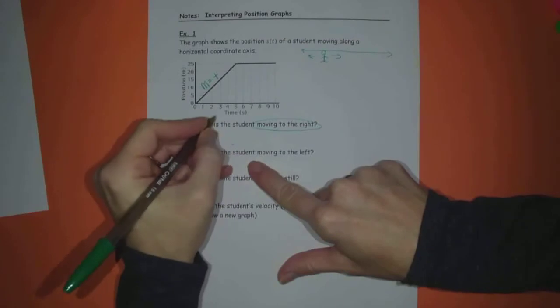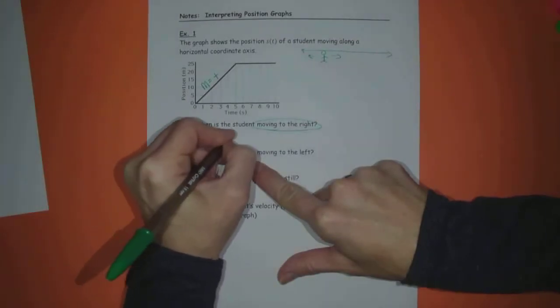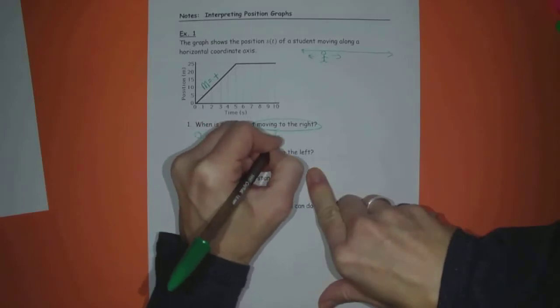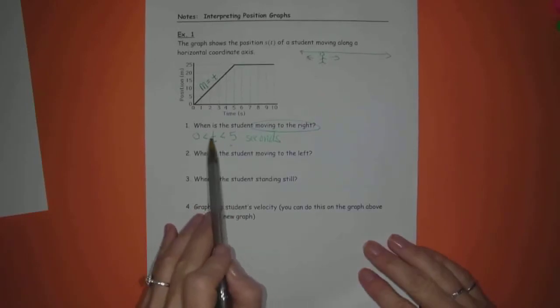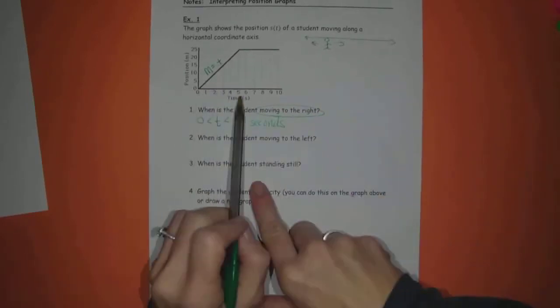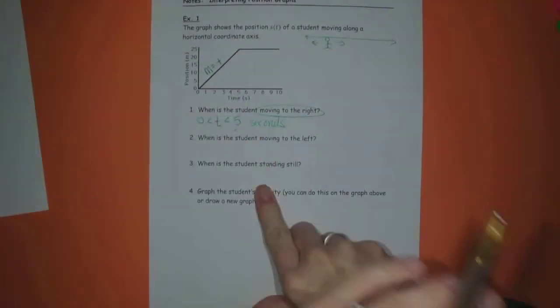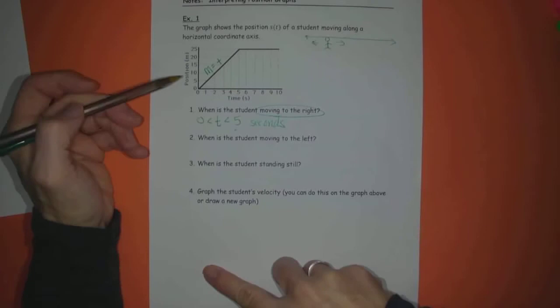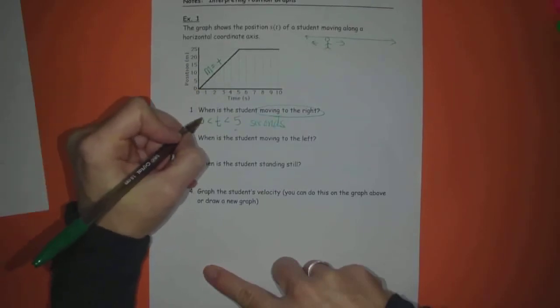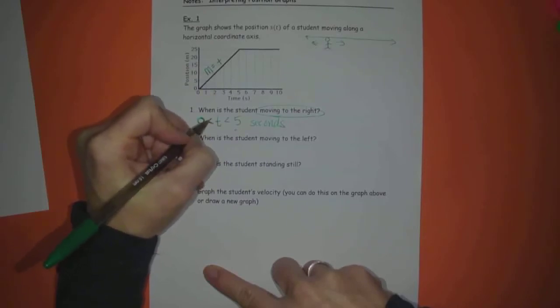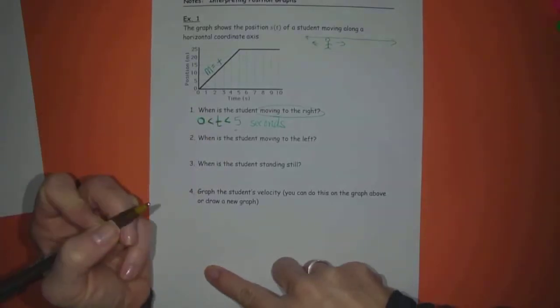So I'm going to say for t between 0 and 5 seconds, and I am going to leave those open simply because at 5 we're fighting with a positive velocity and a 0 velocity because of that corner. I'm also going to assume that at time 0, when position is 0, we're not actually moving. So I'll just leave these open to the interior of that interval.